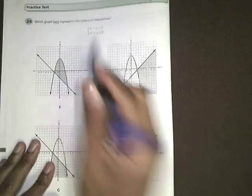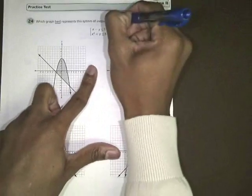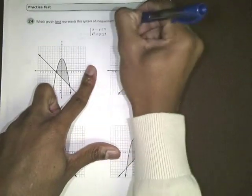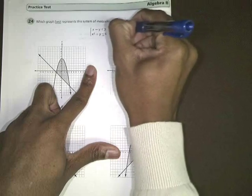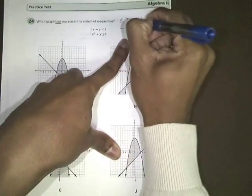Okay, so we're dealing with inequalities, so there are a few things that we need to remember about these. Whenever you have a less than or equal to or greater than or equal to, that means you're supposed to have a solid line. And whenever you have a less than or greater than, that means you're supposed to have a dotted line.